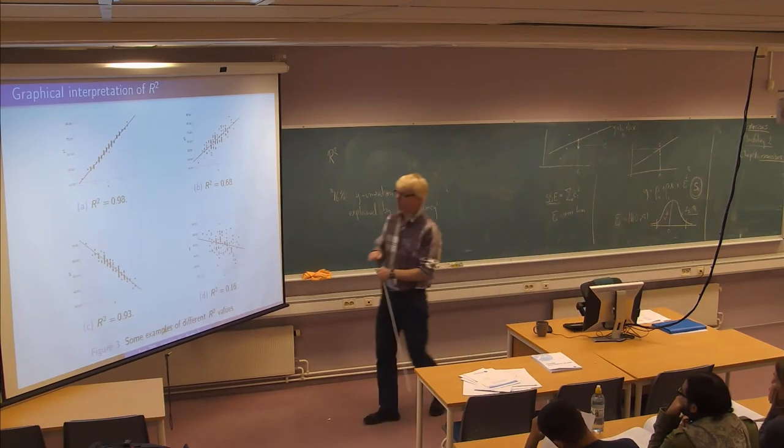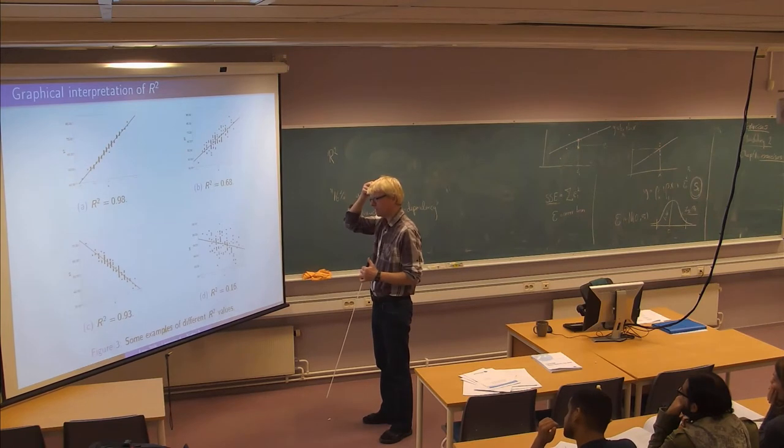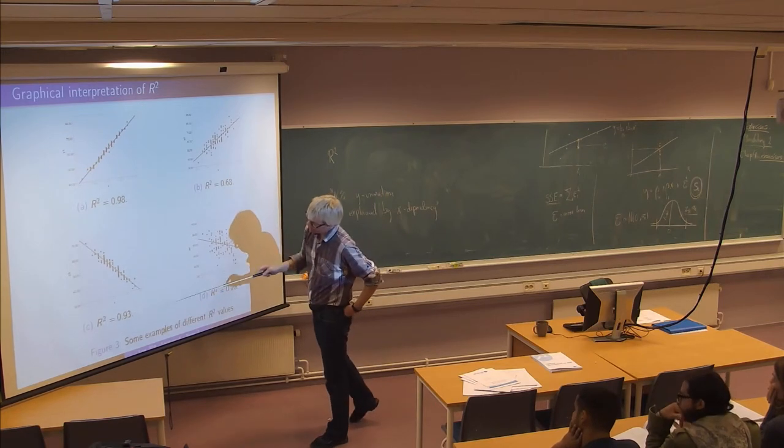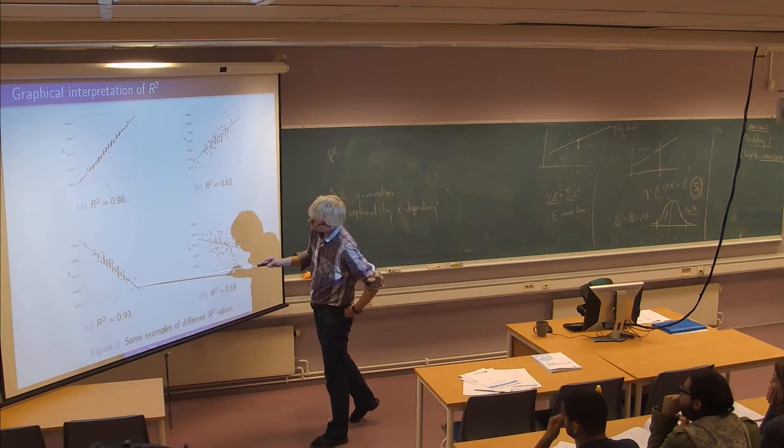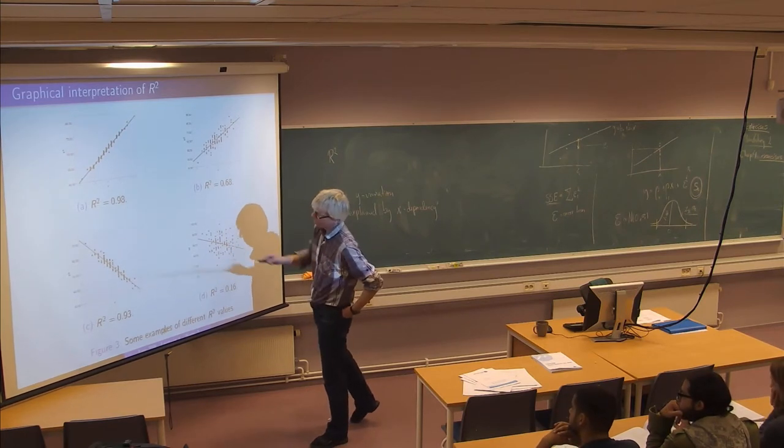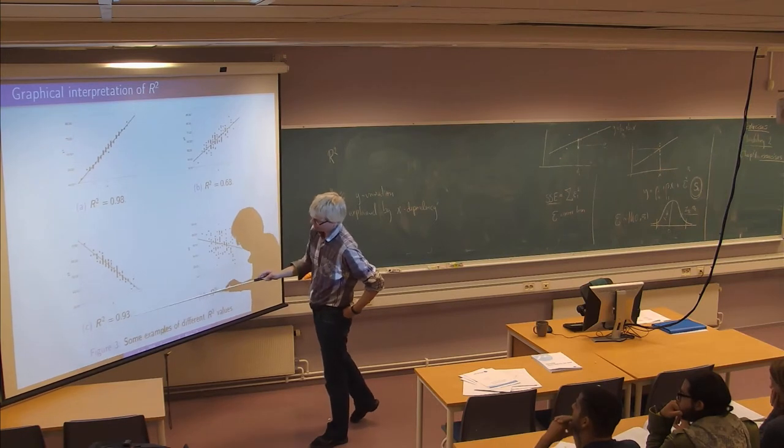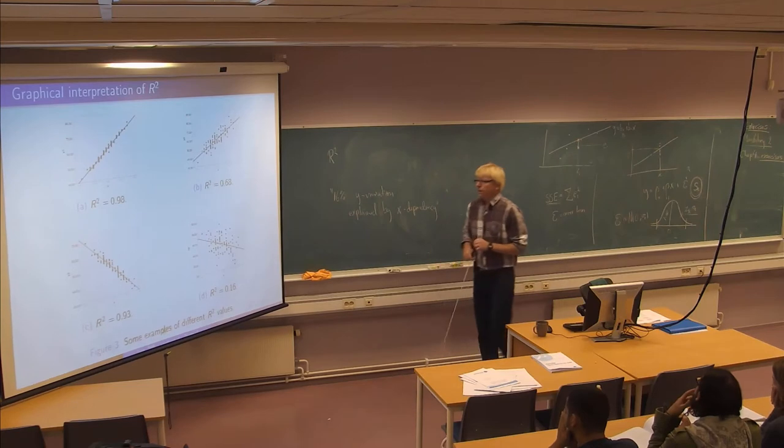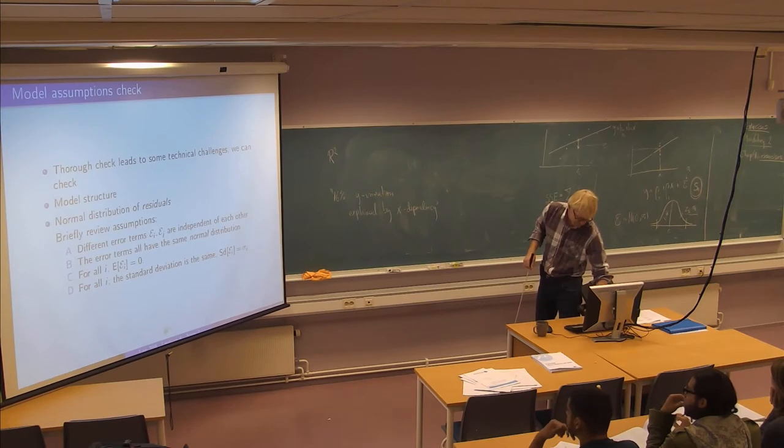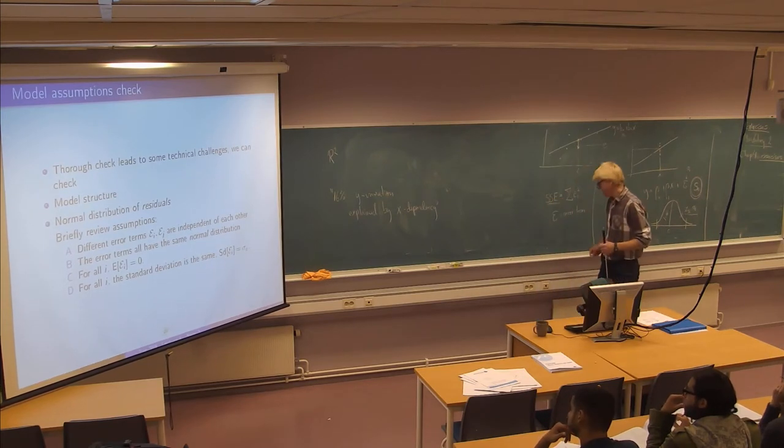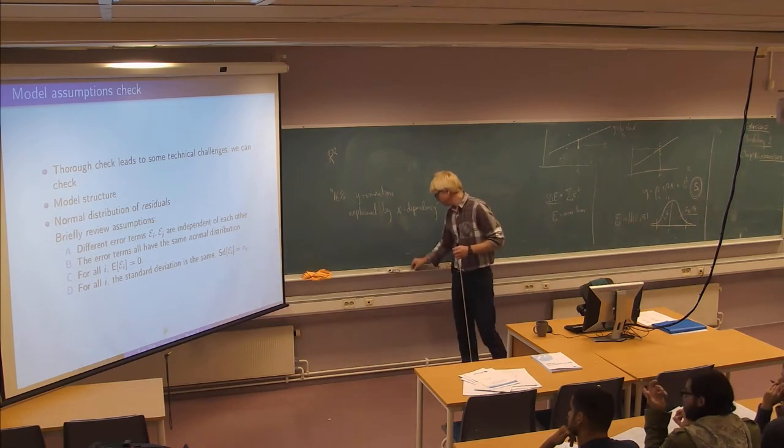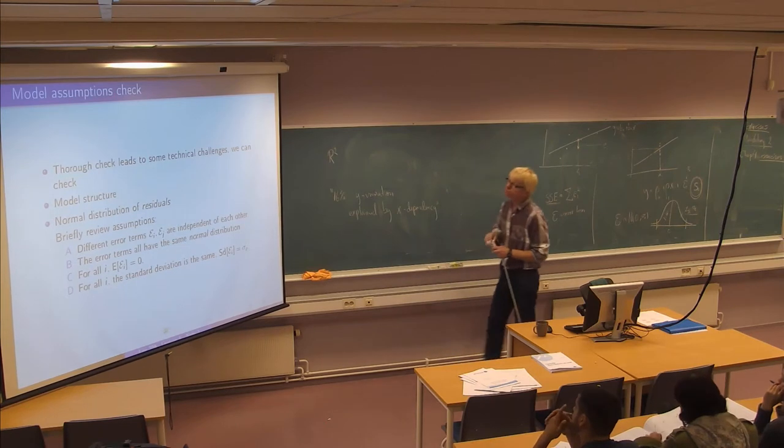And you see unlike the correlation this R square is actually quite closely connected to the correlation but it's not going to be a negative number. It's always between 0 and 1. So here is a strong negative correlation. It means a lot of the Y variation again can be explained by X only it's now a negative trend. But the R square is still positive.